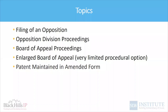After an opposition is filed, there's an initial proceeding referred to as the opposition division proceeding. There are three possible outcomes: your patent could be revoked completely, your patent could be upheld as it was initially granted, or your patent could be upheld but it has to be amended. That outcome may be appealed to the board of appeals. In extremely rare circumstances, there may be an additional appeal to an enlarged board of appeals.